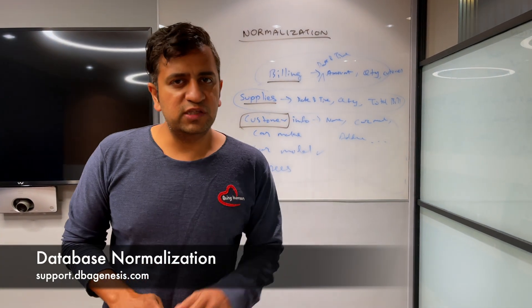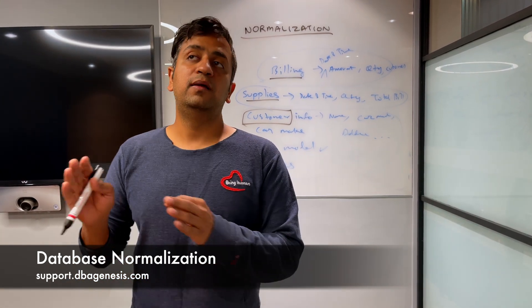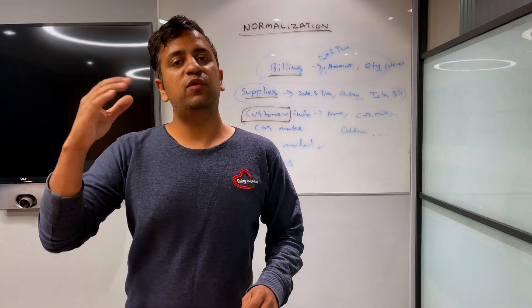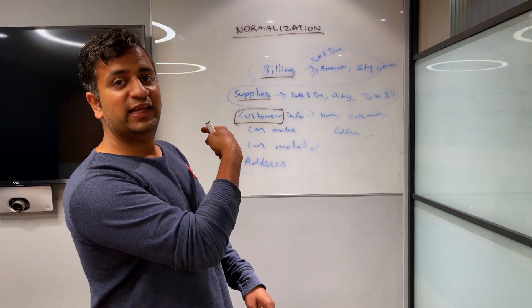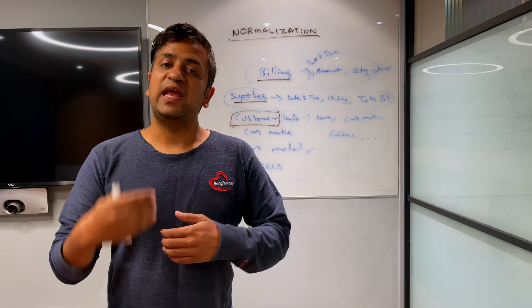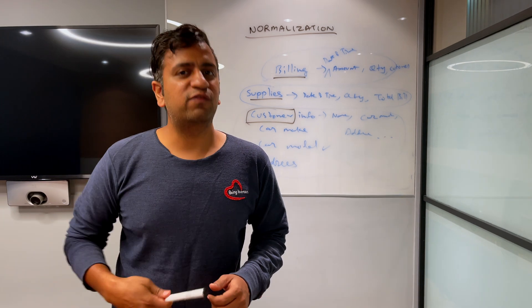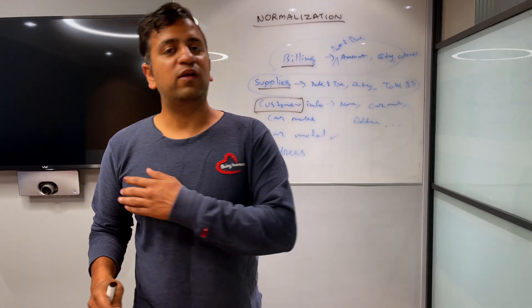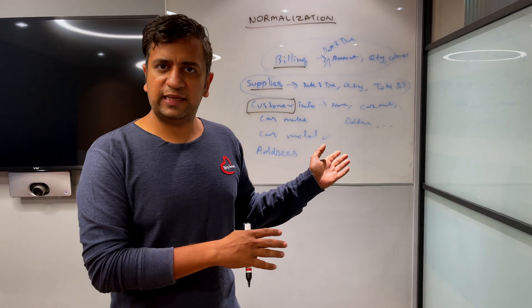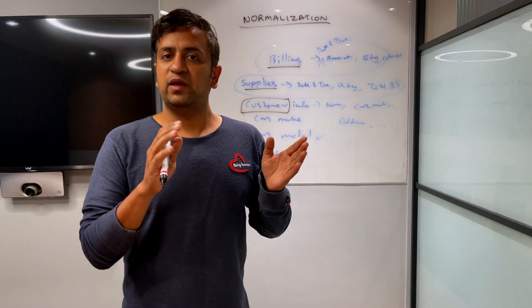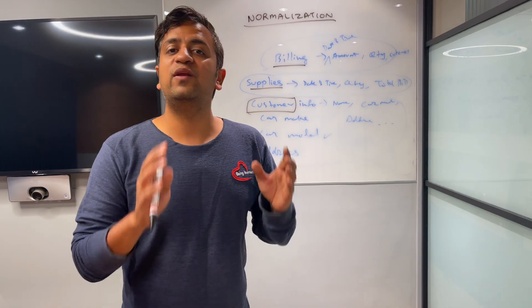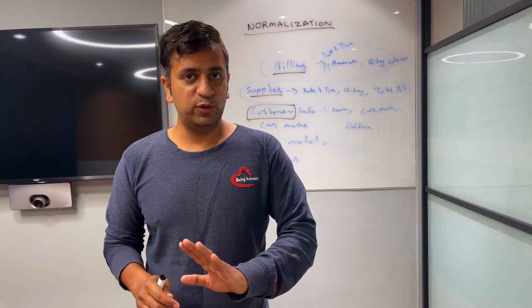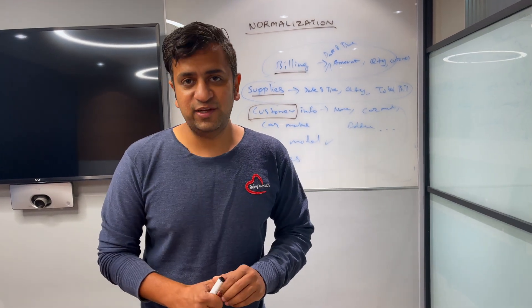I would like to challenge all of you — go to support.dbagenesis.com, we have an amazing article about data normalization. Read the entire article and use the first normal form, second normal form, and third normal form approach to refine this car wash data. In one of my next videos I'll come up with more complex examples of normalization. One of the simplest ways to start loving the Oracle database is to play with data like this and work on exercises. Normalize John's car wash company data, put your comments below, and I'll see you all in the next video.